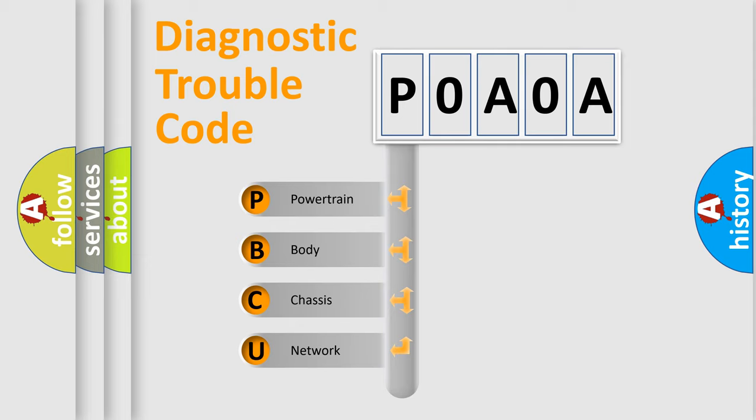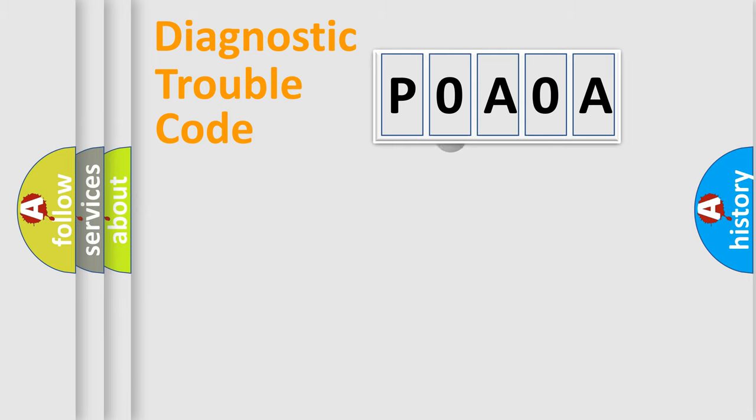We divide the electric system of automobiles into four basic units: Powertrain, Body, Chassis, and Network. This distribution is defined in the first character code.